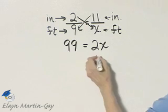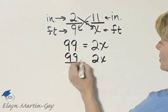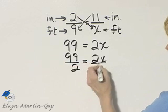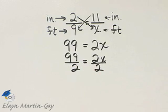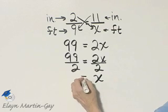And then how do I solve this for x? I'll divide both sides by the coefficient of x, which is 2. And notice on the right side I have 2 over 2, which is 1. 1 times x is simply x.